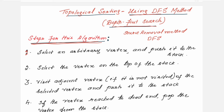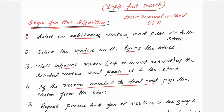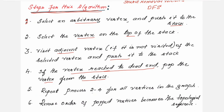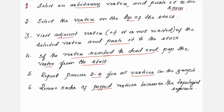Now I will go straight to the steps for the DFS method. The first step is to select an arbitrary vertex and push it to the stack. Then select the vertex from the top of the stack. For that vertex, visit the adjacent vertices. If there are more than one adjacent vertices, select any one randomly and push it to the stack. If the vertex has reached a dead end — meaning it has no adjacent vertices — then pop that vertex from the stack. Repeat steps 2, 3, and 4 for all vertices in the graph. Finally, reverse the order of the popped vertices.